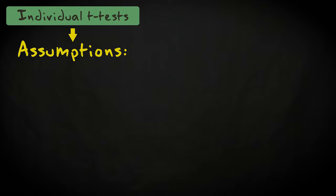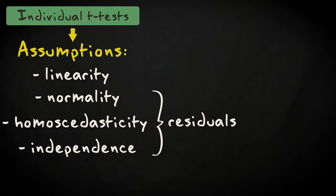The assumptions that need to be met in order for the t-test to give valid results are the same as for the overall test. These assumptions are linearity of each predictor and the response variable for each value of the other predictors, and normality, homoscedasticity, and independence of the residuals.